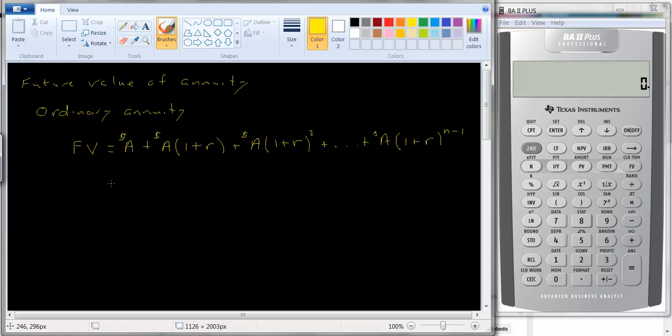Well, just like we did before, you can factor out the A. And you get this. One plus R, A times one plus R, plus one plus R squared, et cetera, all the way out to one plus R to the n minus one power.